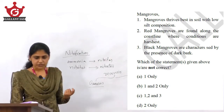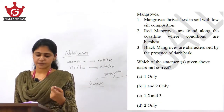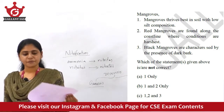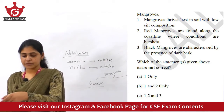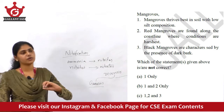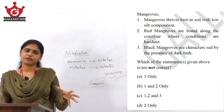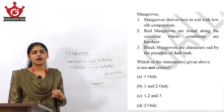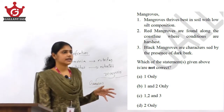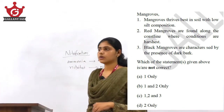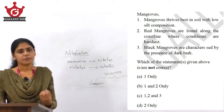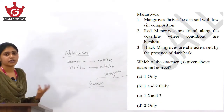The first statement says mangroves thrive best in soil with low silt composition. Mangroves are very rich in biodiversity and are found in unique environments mainly between the land and water area. They act as a buffer zone between the land ecosystem and the marine ecosystem — a transitional area between the terrestrial and aquatic ecosystem — functioning as an ecotone. They are a highly productive ecosystem.